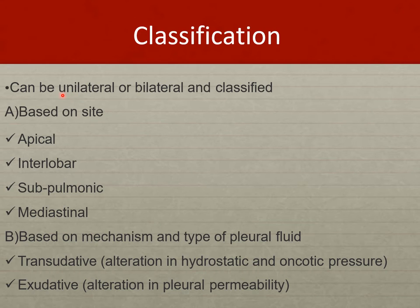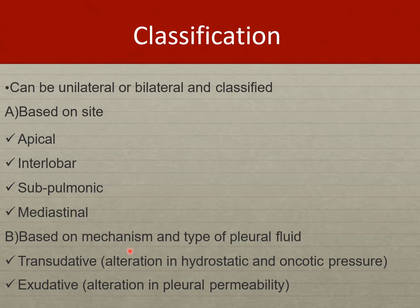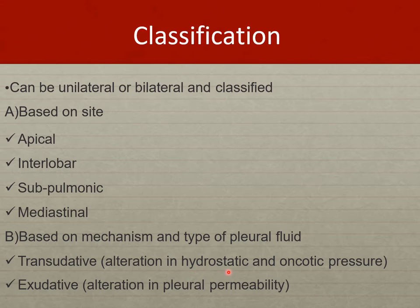Classification can be as simple as unilateral or bilateral pleural fluid, or we can base it on the site where the fluid is present — such as apical, interlobar, sub-pulmonic, or mediastinal areas. It can also be classified based on the mechanism of formation: transudative or exudative. In transudative effusions, this is usually because of increased hydrostatic pressure or decreased oncotic pressure.